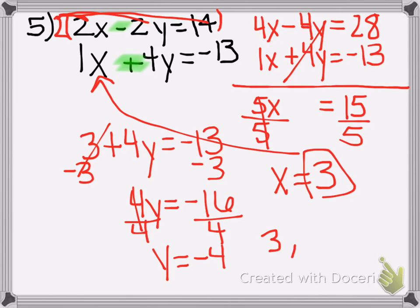So as a coordinate, the answer is 3, negative 4 for the solution to that system of equations.